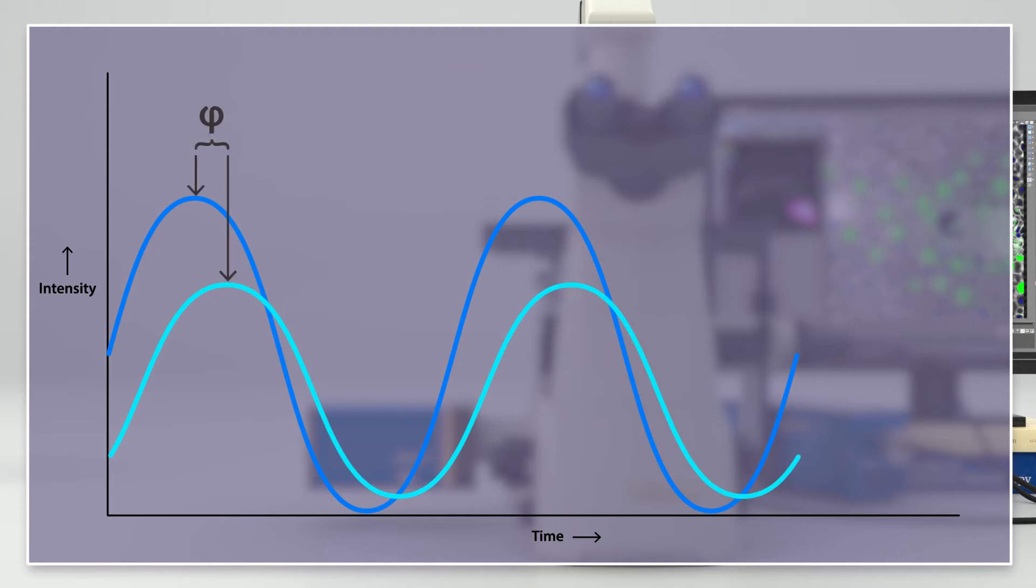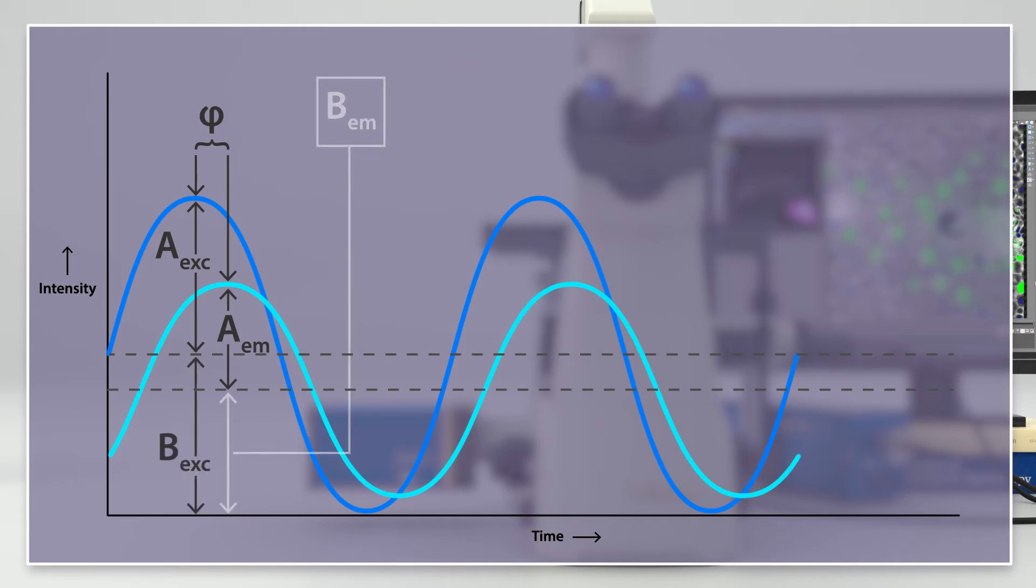The phase angle, phi. Also, the excitation and emission amplitudes, A-excitation and A-emission, become clear. And the constant components, B-excitation and B-emission.